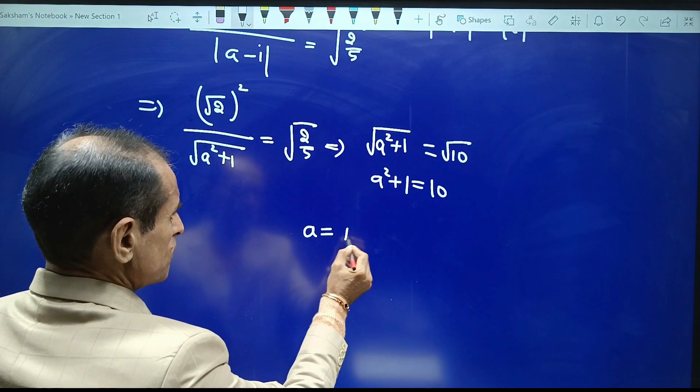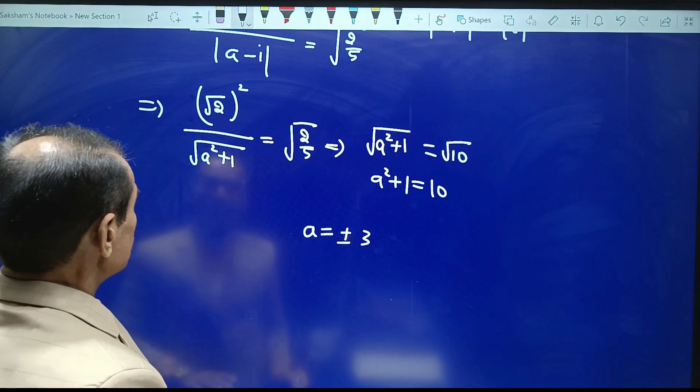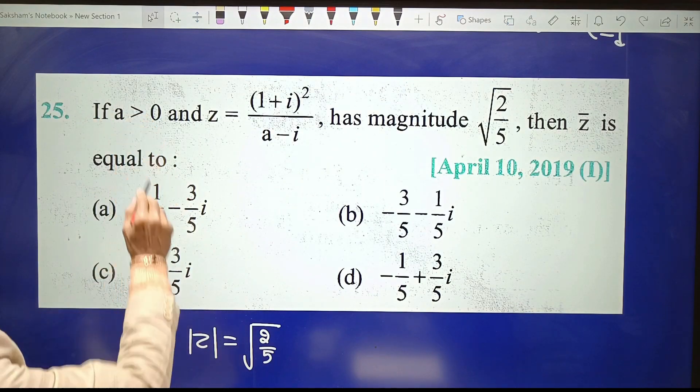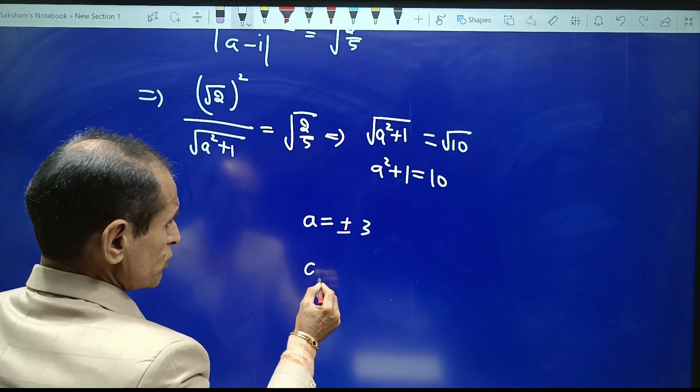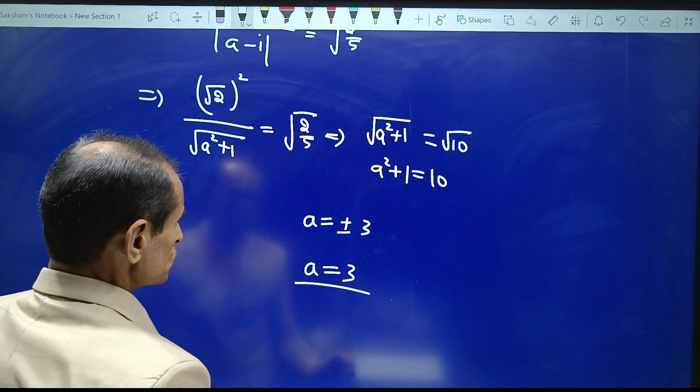That is, the value of a is ±3. But a was given as positive, hence we conclude that a = 3.